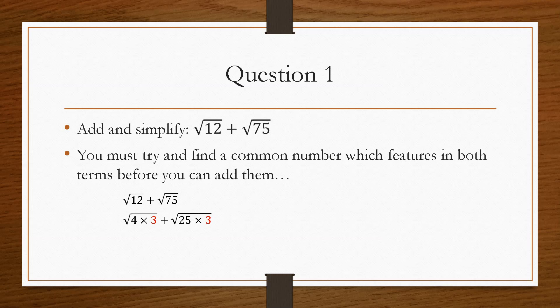And then I'm going to try 25 times 3, because what that will allow to happen is, when we separate them, we will get the square root of 4, which we can do, and we get the square root of 25, which we can do, which leaves both the square root of 3 on each term.